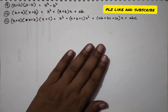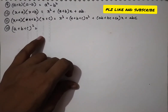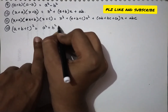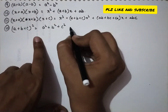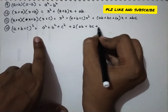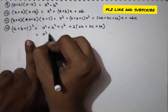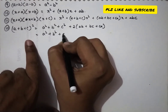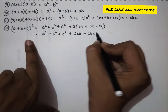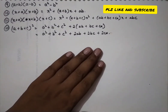For the square of three terms, (a + b + c)², the expansion is a² + b² + c² + 2ab + 2bc + 2ca.